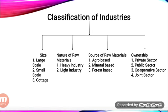First let us study about the cotton textile industry, which is considered the oldest industry in India. Textiles include cotton, jute, wool, silk, and synthetic fiber. India has 3,400 textile mills with an installed capacity of more than 50 million spindles and 842,000 rotors, making it second largest in the world.